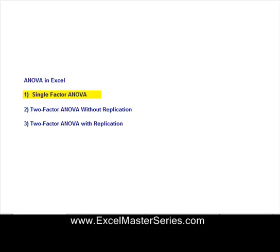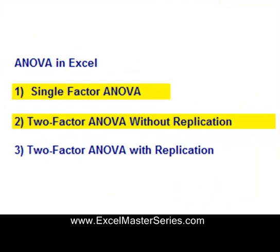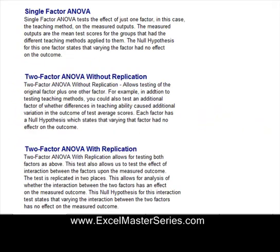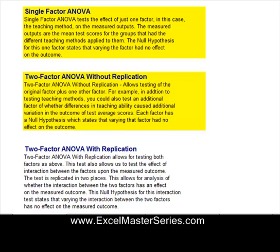There are three types of built-in ANOVA in Excel. We have single-factor ANOVA, which we're going to be doing today, two-factor ANOVA without replication, and two-factor ANOVA with replication. For single-factor ANOVA, you're just varying one factor, you assume everything else is the same, and that one factor has its own null hypothesis stating that varying that factor had no effect on the outcome.